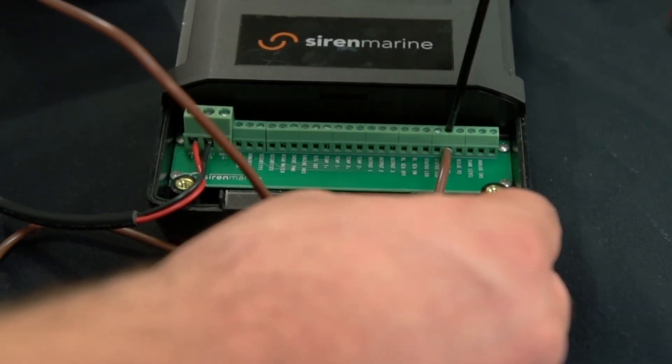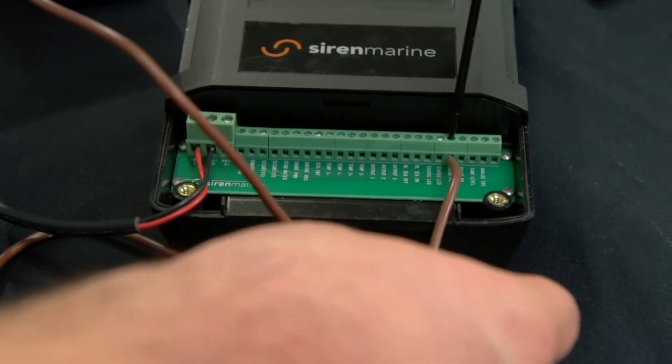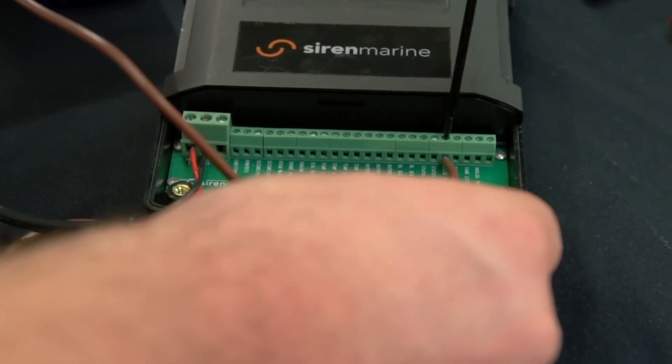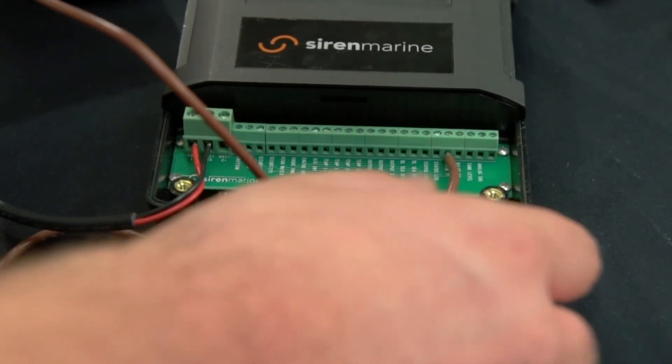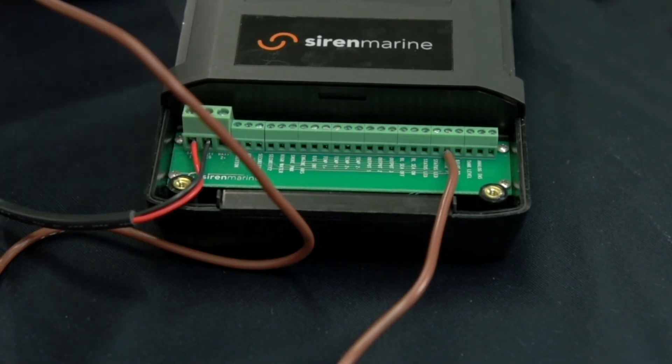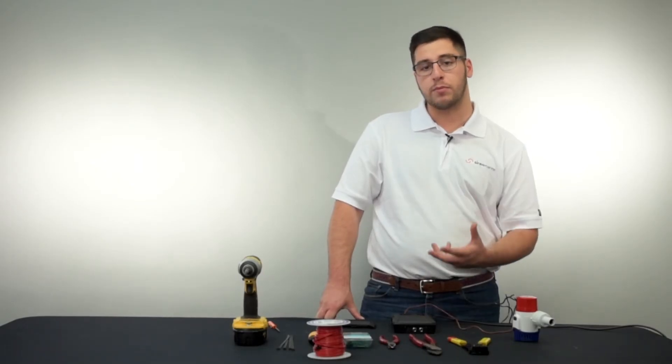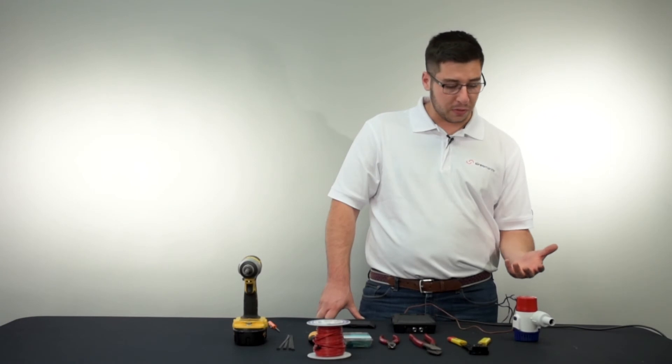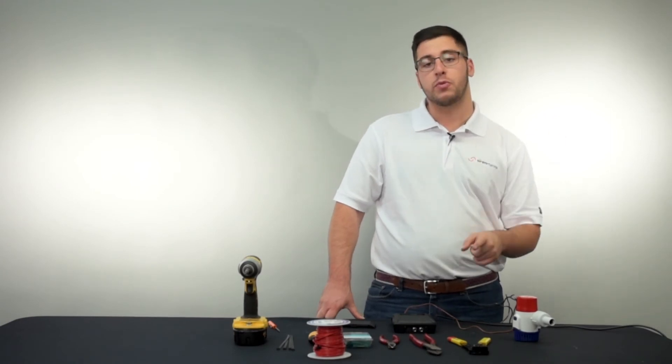Just like that, you're gonna be monitoring bilge activity. Whenever this bilge kicks on, that positive signal is going to close the switch in our MTC to alert you that the bilge is running. Obviously we're going to be monitoring both sides, when it turns on and when it turns back off.